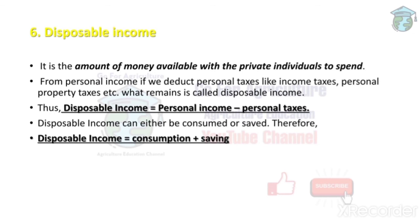Next is disposable income — the amount of money available with private individuals to spend. Basically, disposable income equals personal income minus personal taxes. For example, if your monthly salary is one lakh but you pay around fifty thousand in taxes, your actual income is fifty thousand. That fifty thousand is your disposable income, which equals consumption plus saving.